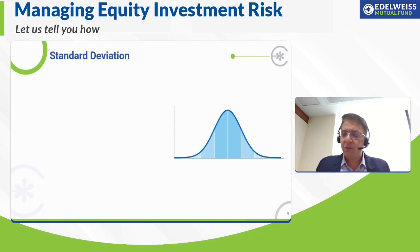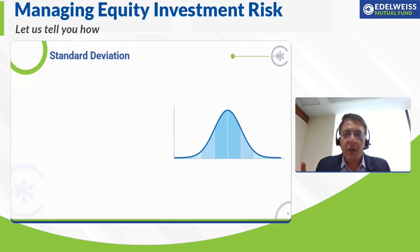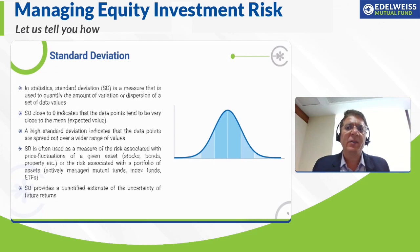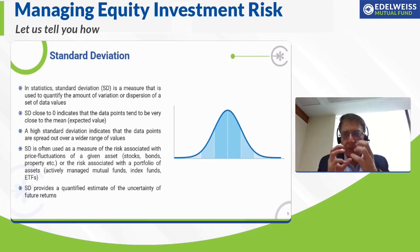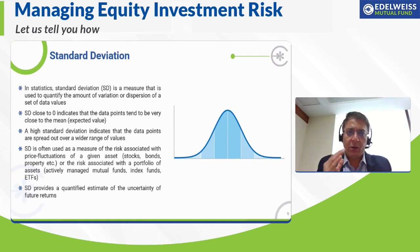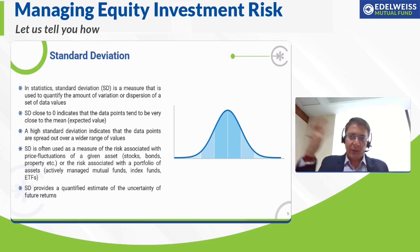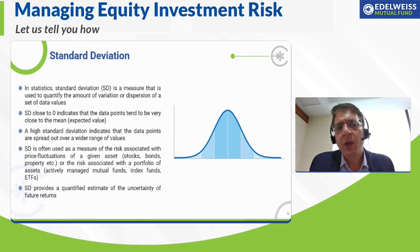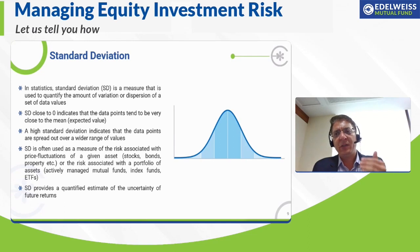A better term derived from variance is standard deviation. This is something more commonly spoken about and more widely written about. Standard deviation, just like variance, tells you what is the deviation of that scheme compared to its average, mean value, or expected value.